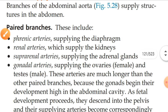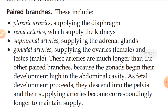The gonadal arteries are much longer than the other paired branches because the gonads begin their development high in the abdominal cavity. As fetal development proceeds, they descend into the pelvis and their supplying arteries become correspondingly longer to maintain the blood supply. This is the speciality given to the gonadal arteries.